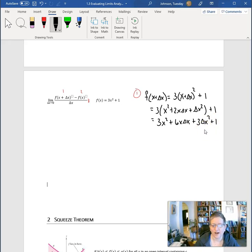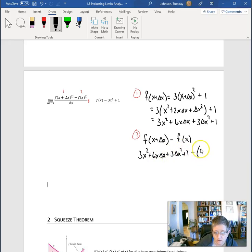If you're not in my class and you're watching this, I'm kind of like this in class too. Part two. Now I'm going to take this f of x plus delta x and I'm going to subtract the original function. So I'm going to take 3x squared plus 6x delta x plus 3 delta x squared plus 1 and subtract 3x squared plus 1.